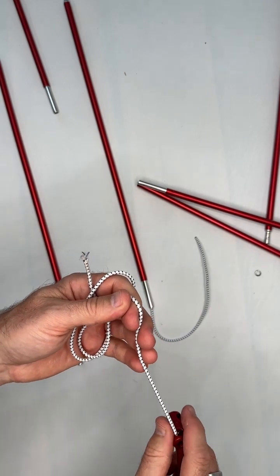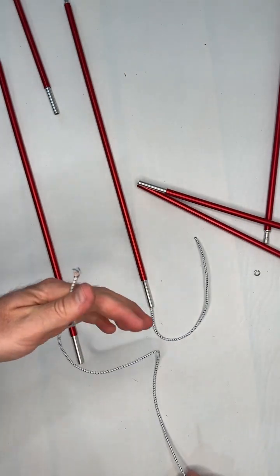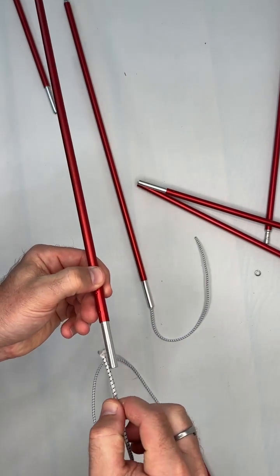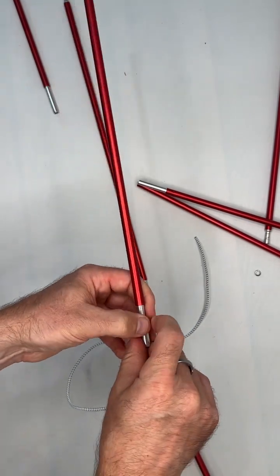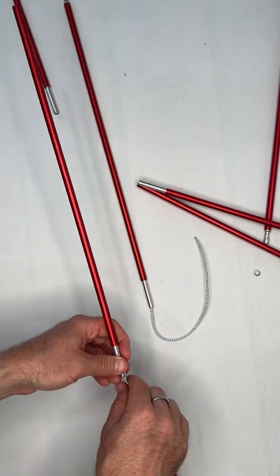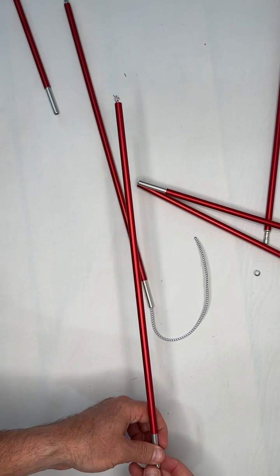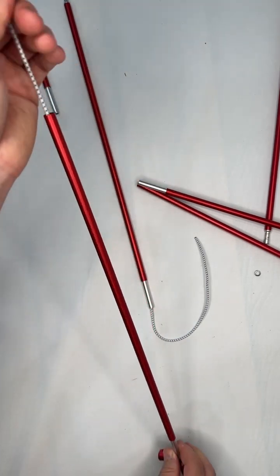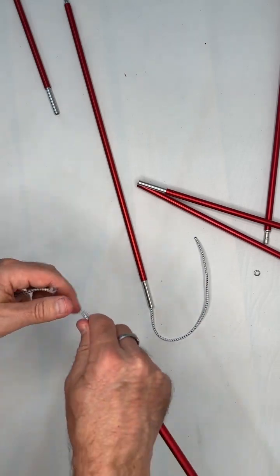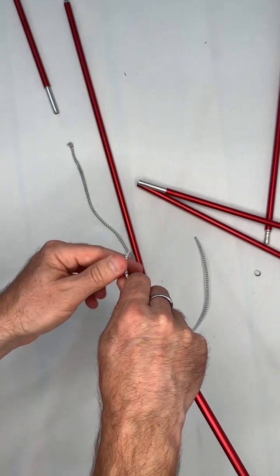We've got the shock cord coming through that side, and now I can feed this bungee through here, same pole that I had done on this section. Keep pushing it through. We've got it through here.